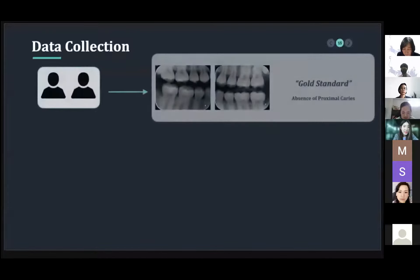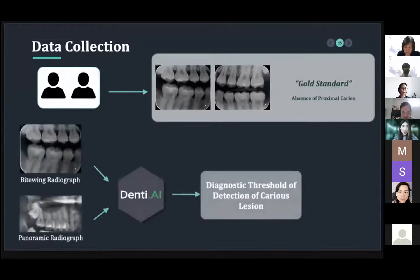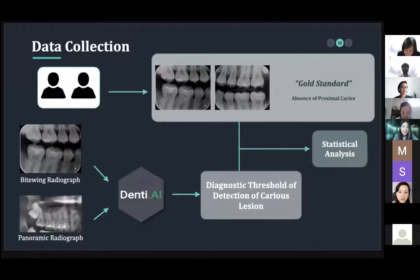Here is the flowchart of the data collection for our research. After randomly choosing the panoramic and bitewing radiograph with tooth surfaces showing absence of caries from the gold standard, the same radiograph was interpreted by the software. The results of the caries detection by the software and the gold standard were then compared to perform the statistical analysis.